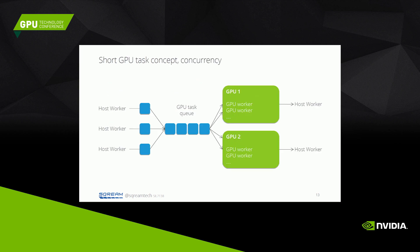Here's a simple diagram of the idea. You have a number of workers running on the host. When they have work ready for the GPU, they post it to a task queue. Worker threads then wait for a GPU to become available, take a task, run it on the GPU, and load the results back to the CPU.